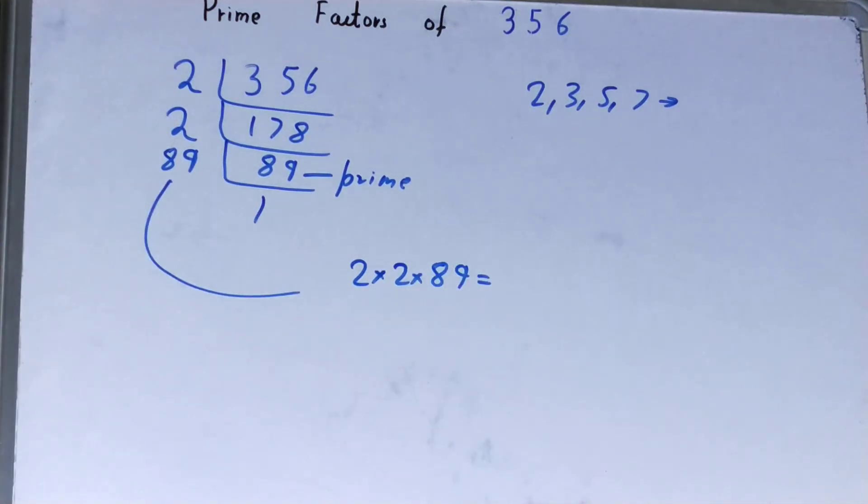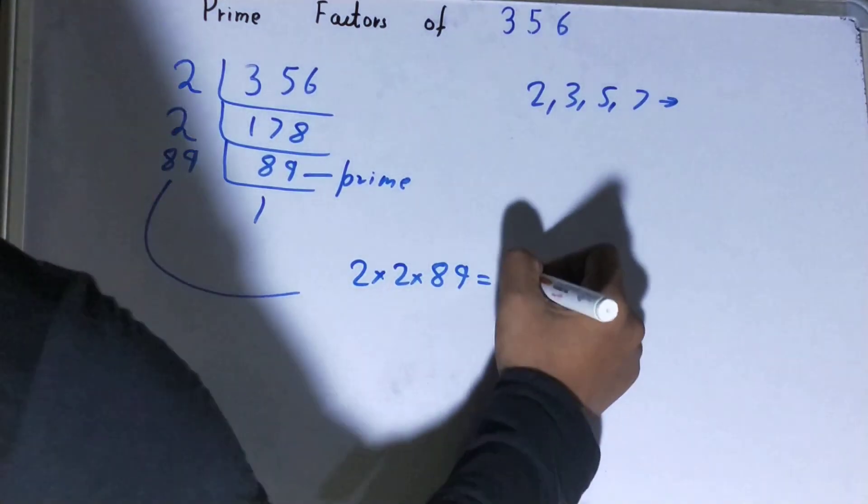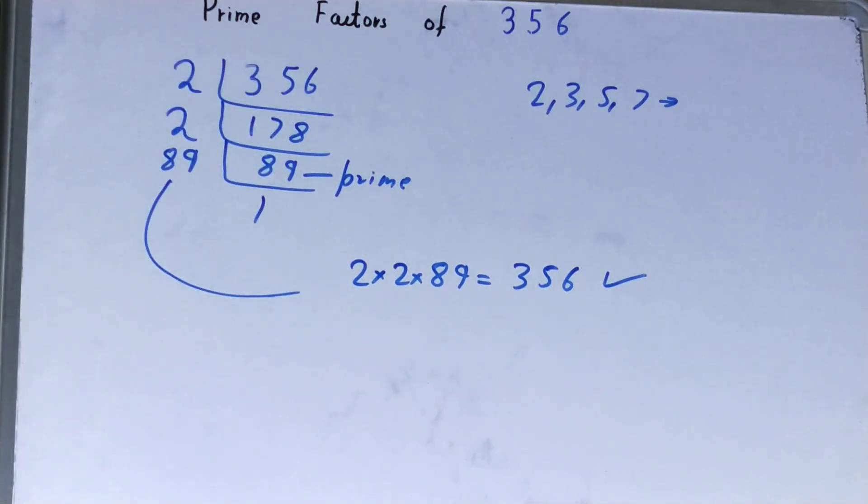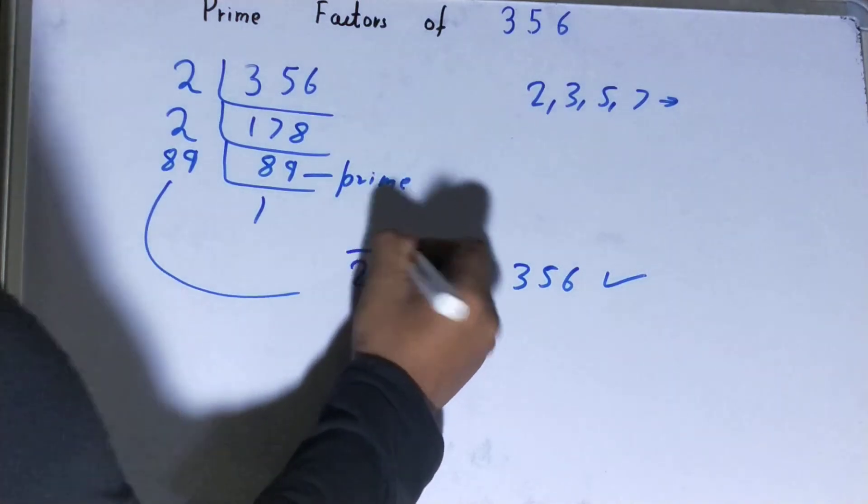If you want to check whether it is right or not, you can multiply them, and if on multiplying you have the number back again, that means your calculation is correct. If not, you need to recheck.